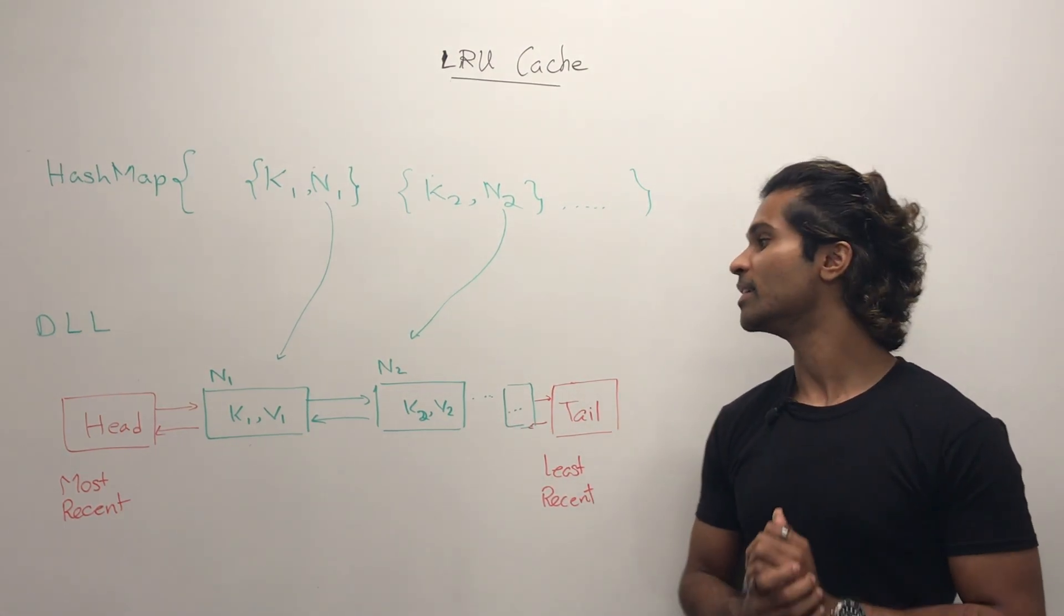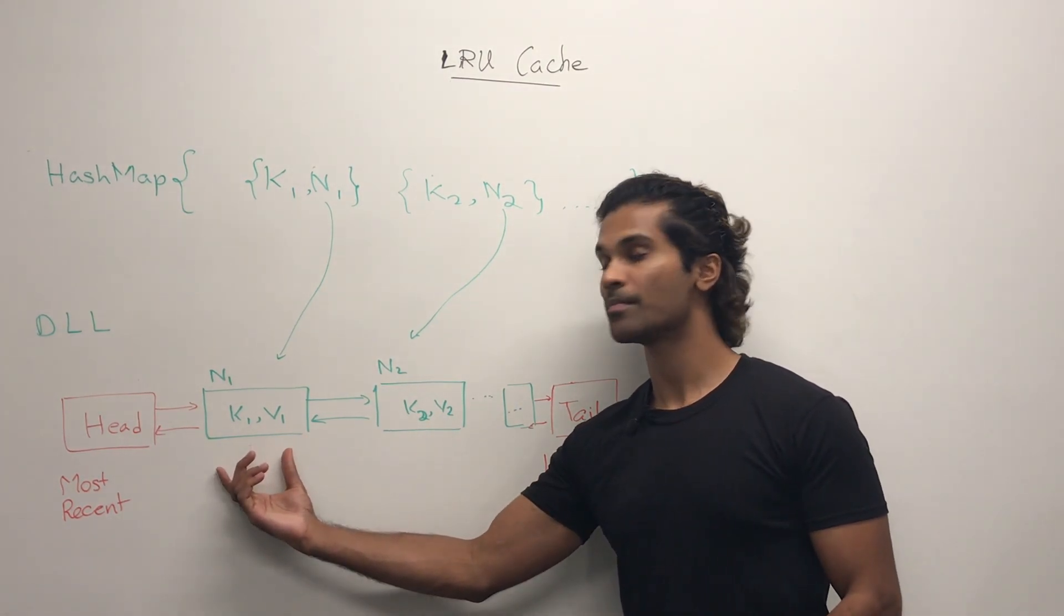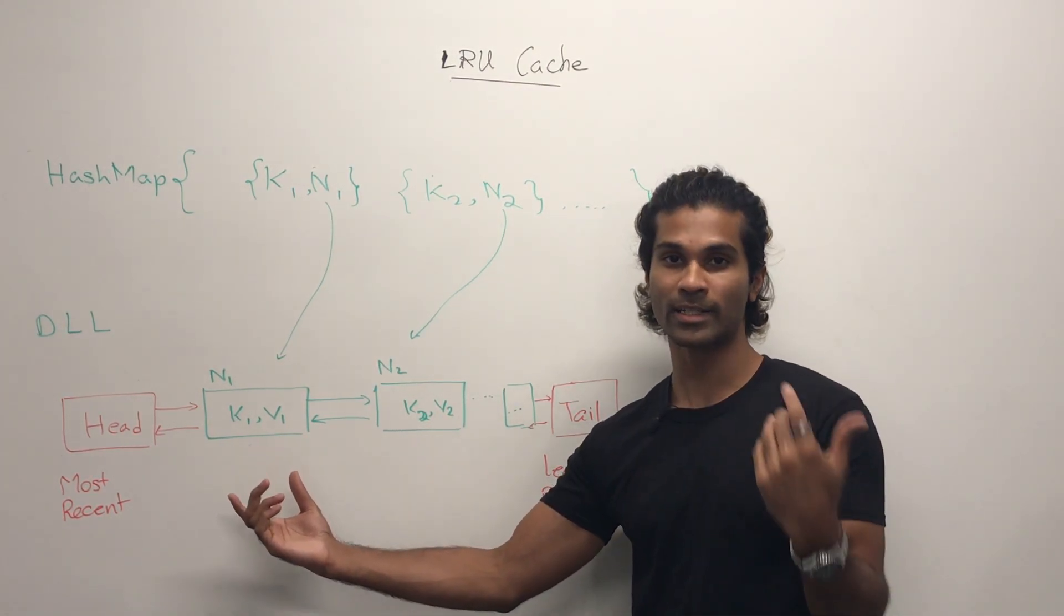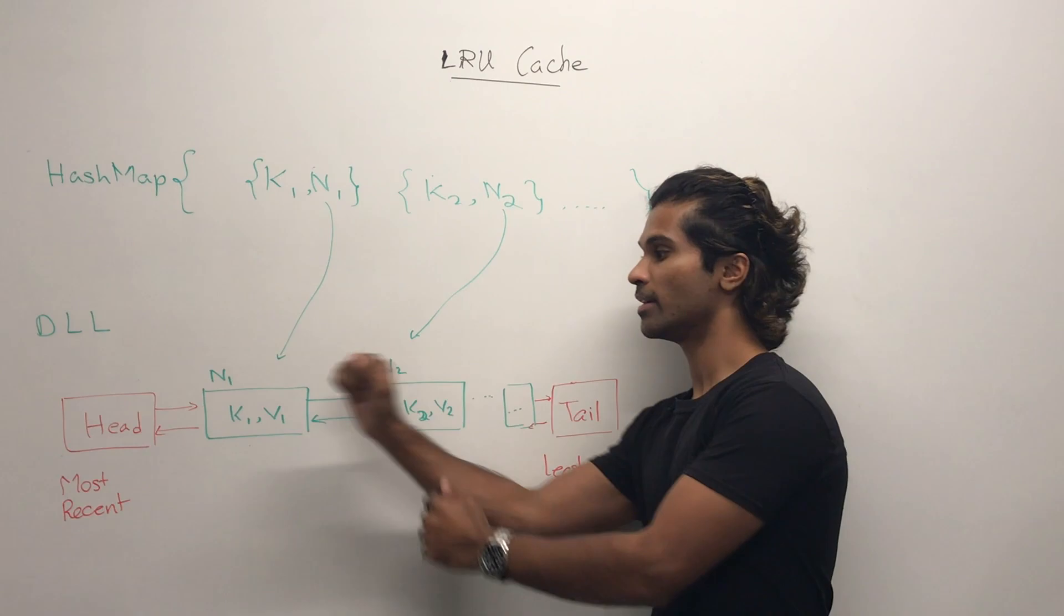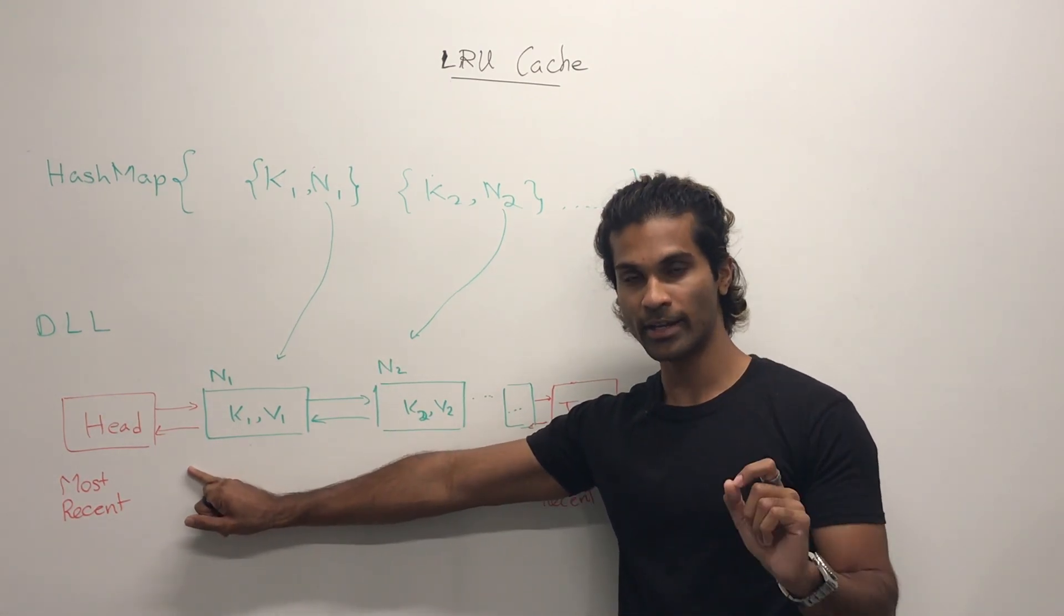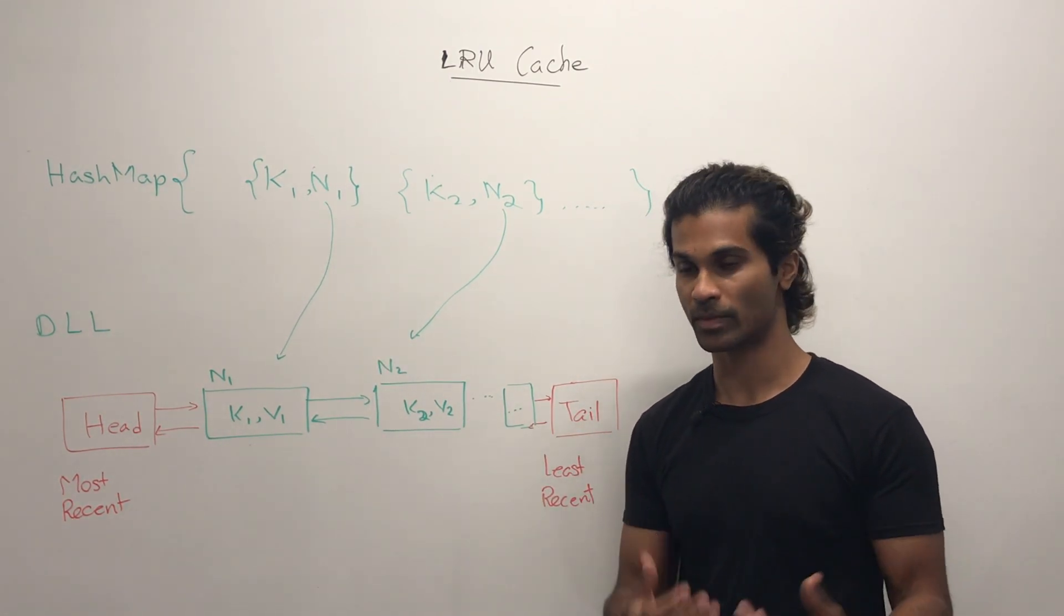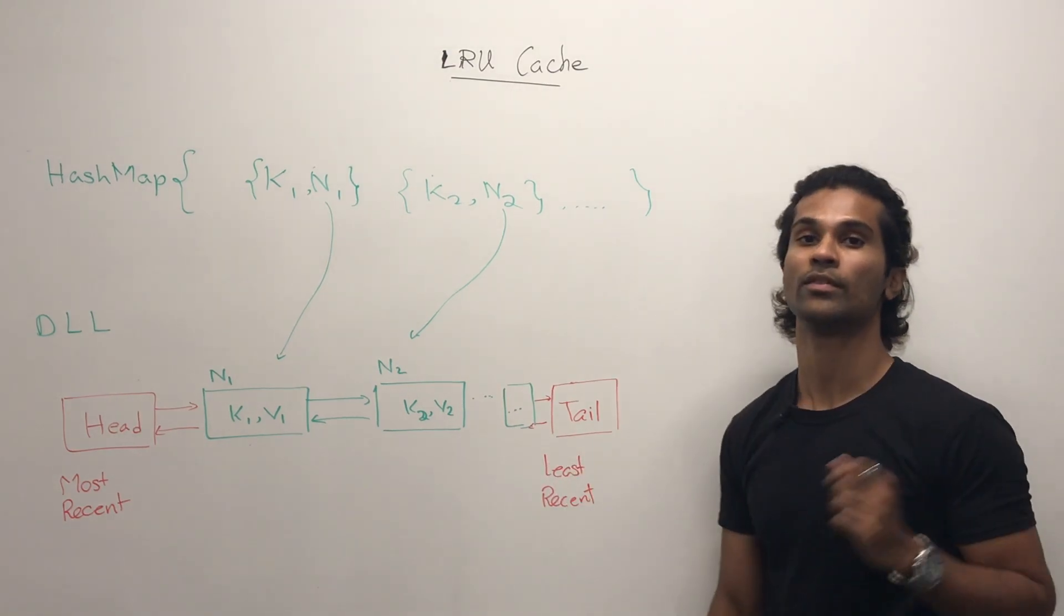But the main idea is that anytime we add a node or access it, it's going to get put at the beginning touching the head and anytime we want to remove something, it gets popped closely from the tail.